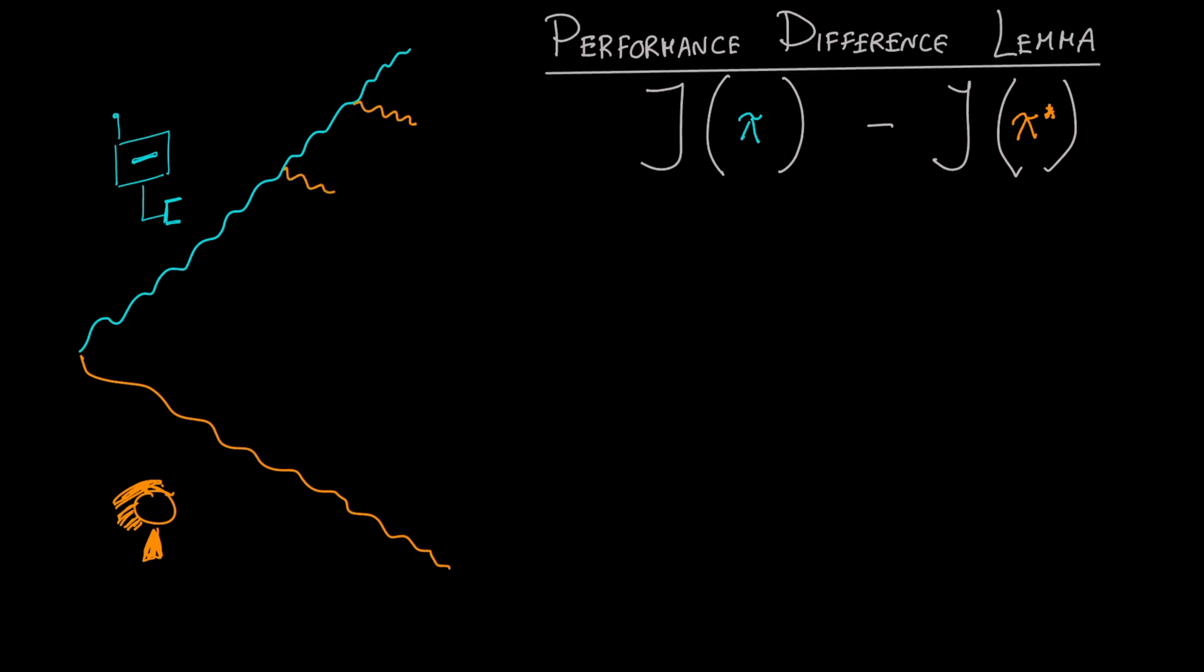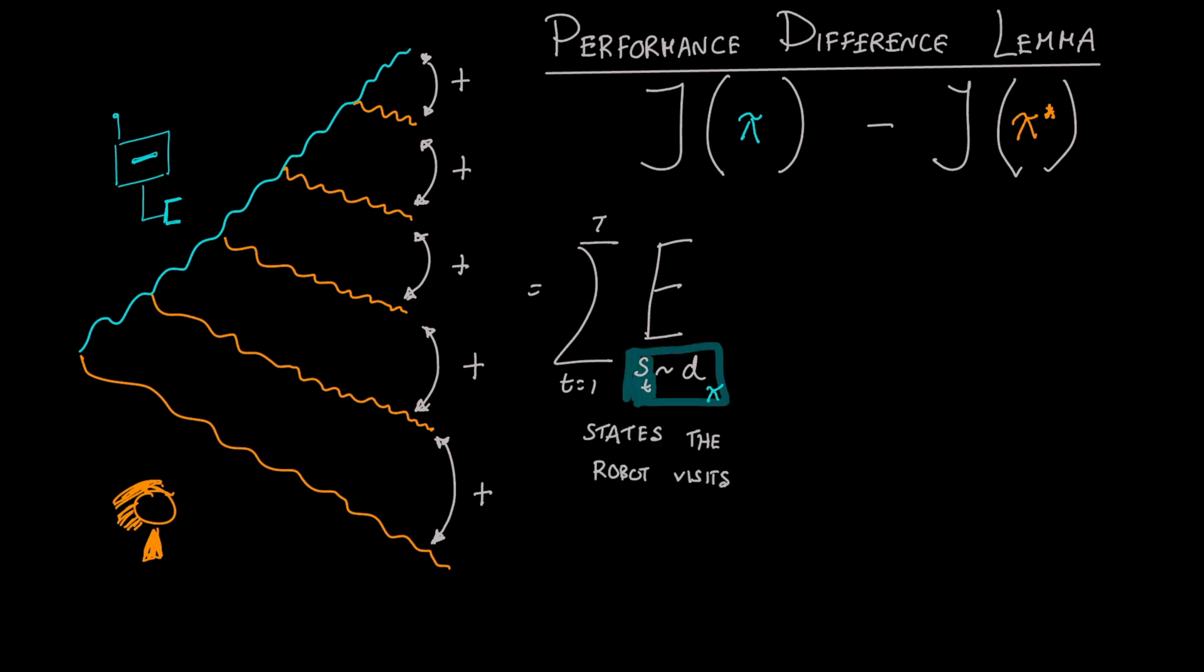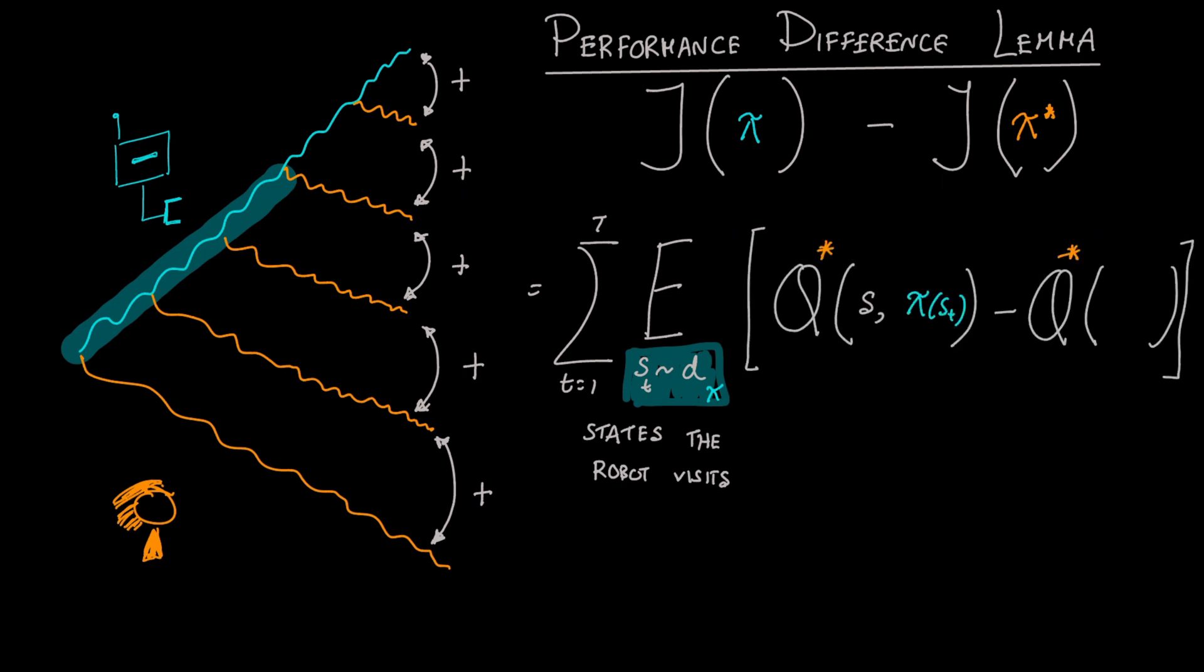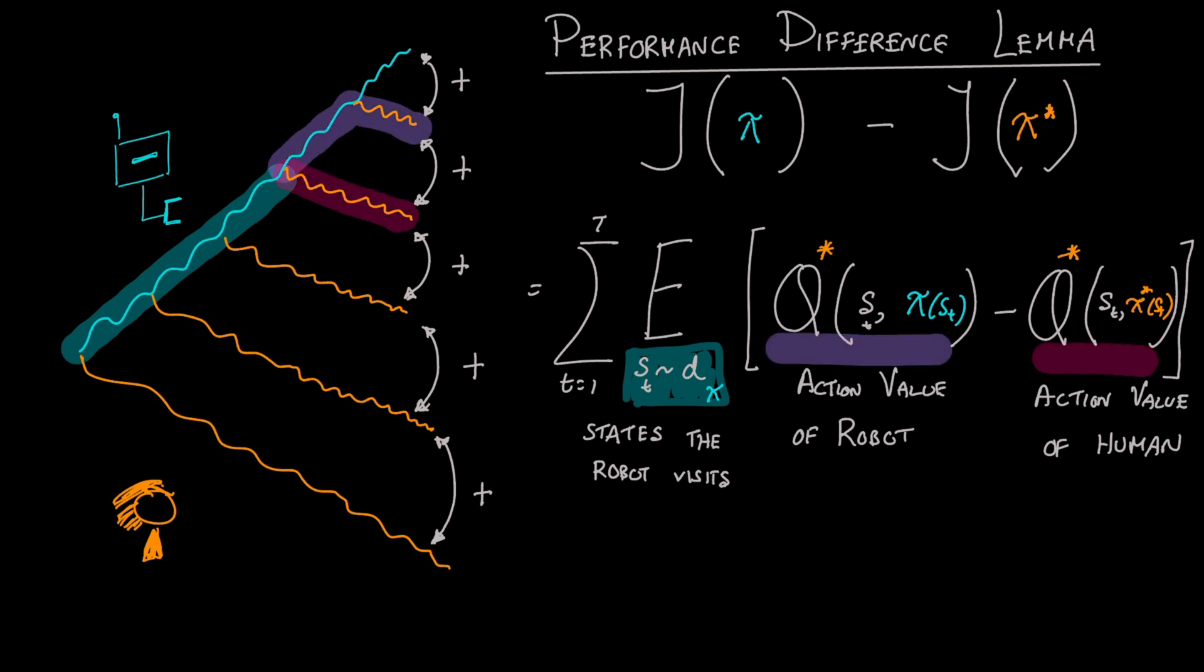The lemma adds and subtracts rollouts of the human policy from every state the robot visits. The lemma states the value difference is nothing but the sum of each of these terms. This can also be expressed as sum over time. At every time, look at the state the robot visits. Take the difference of the optimal action value of the robot policy minus the human policy. That is, difference between robot taking one step and rolling out with the human versus the human rolling out all the way. This difference is called the disadvantage and this is indeed our loss.